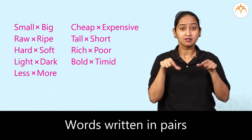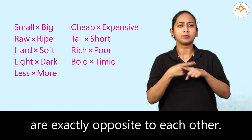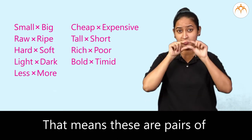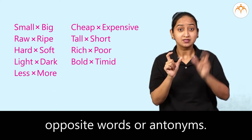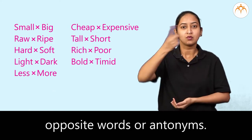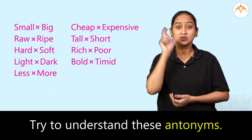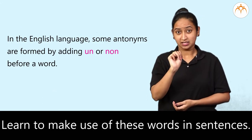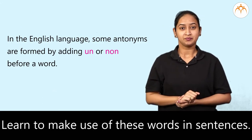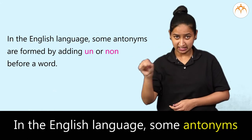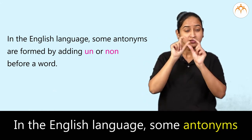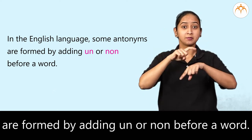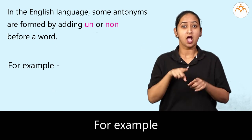Words written in pairs are exactly opposite to each other. That means these are pairs of opposite words, or antonyms. Try to understand these antonyms. Remember them. Learn to make use of these words in sentences. In English language, some antonyms are formed by adding 'un' or 'non' before a word.